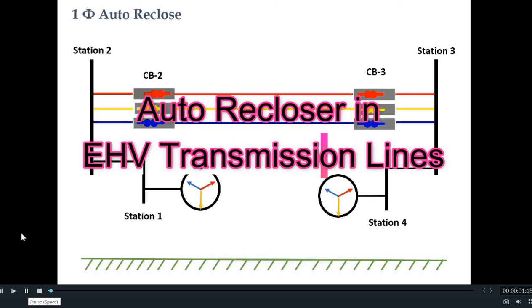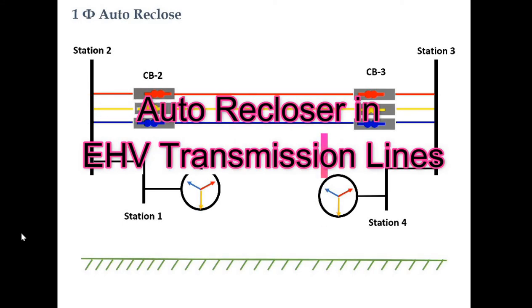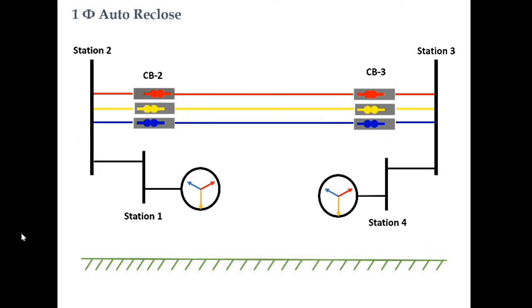Hello friends, today I have come up with a new video on auto reclosure schemes in EHV lines — how it is implemented in transmission lines, why it is implemented, and what are the benefits of auto reclosure in EHV lines. Auto reclosure schemes are implemented in transmission lines basically to reduce the outage time of the transmission line.